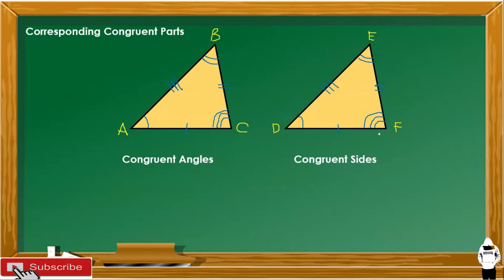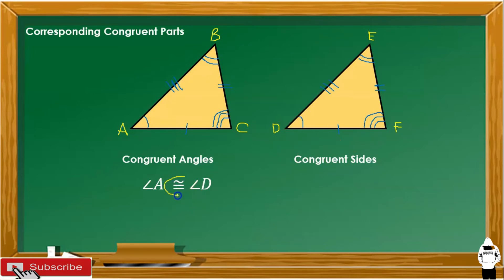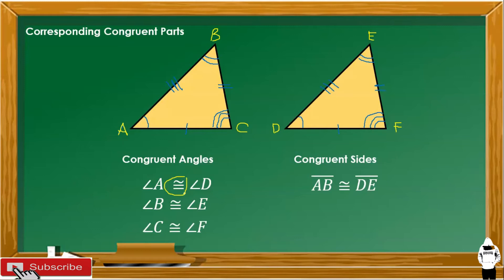Those corresponding angles and corresponding sides are all congruent. Angle A is congruent to angle D. Angle B is congruent to angle E. Angle C is congruent to angle F. Similarly with corresponding sides — segment AB is congruent to segment DE.